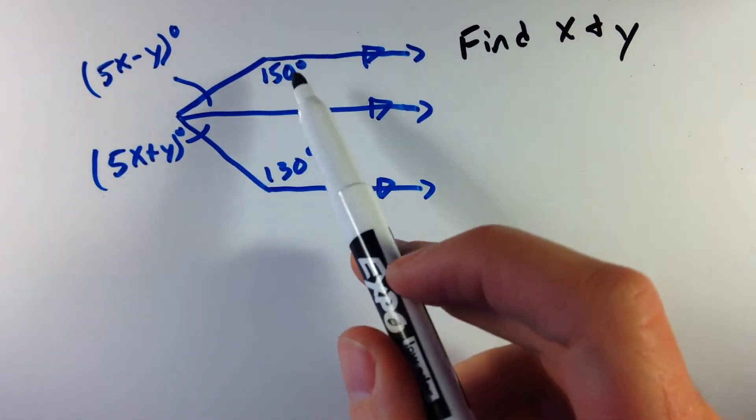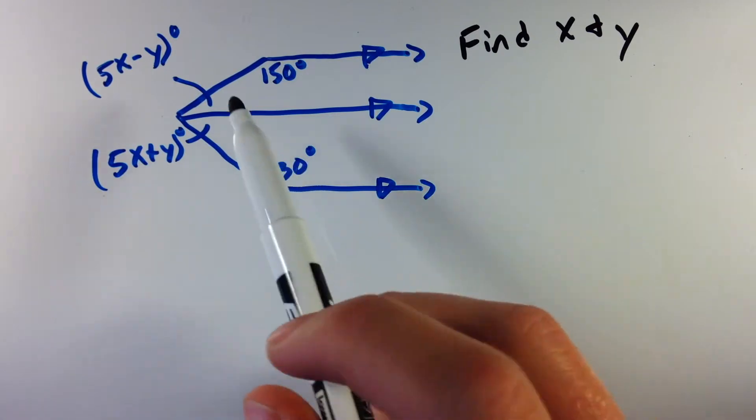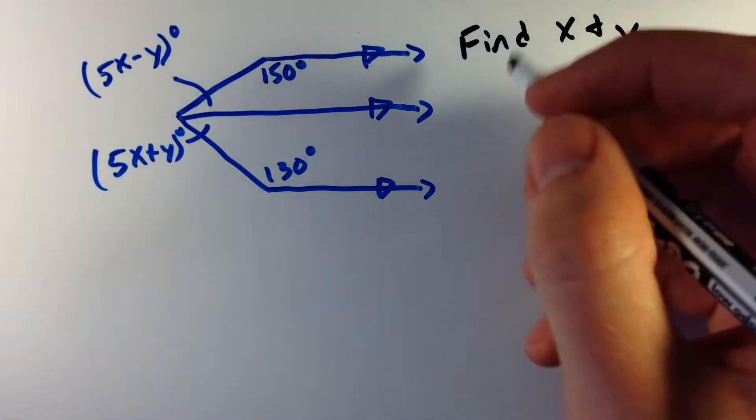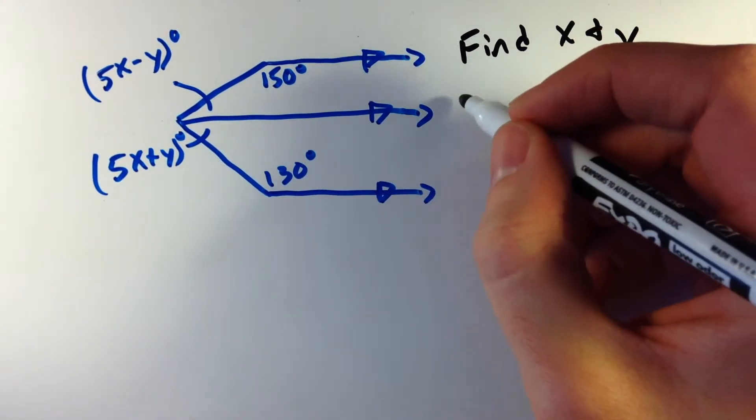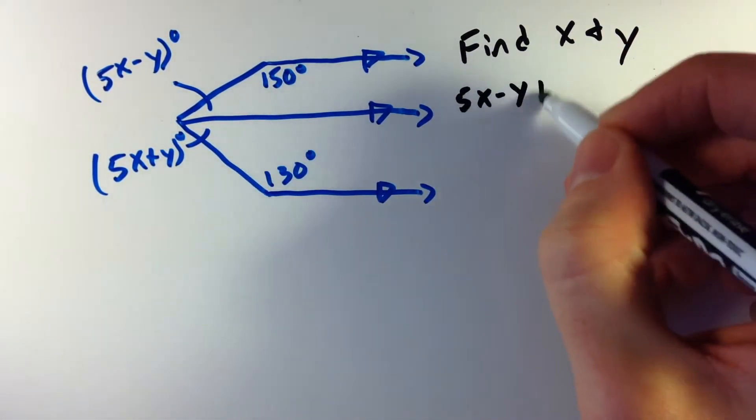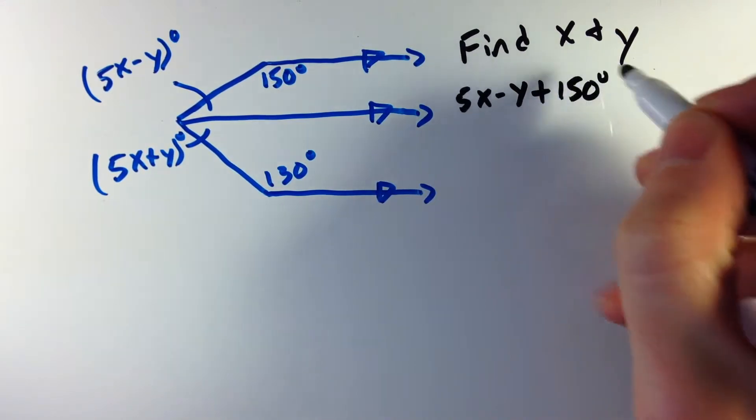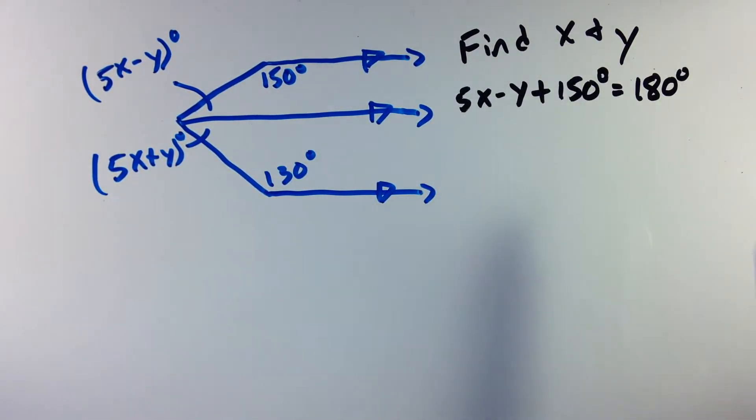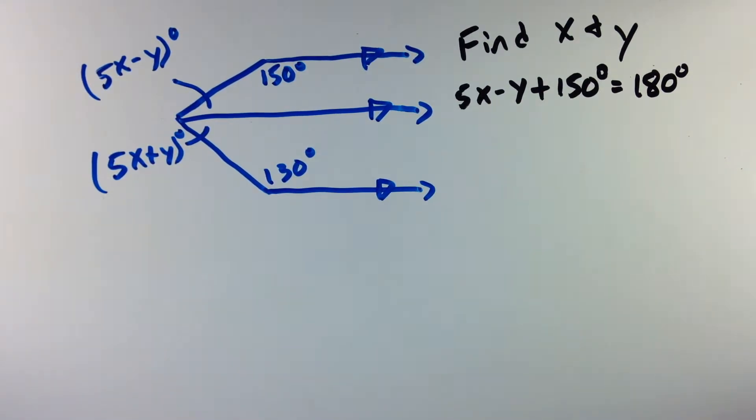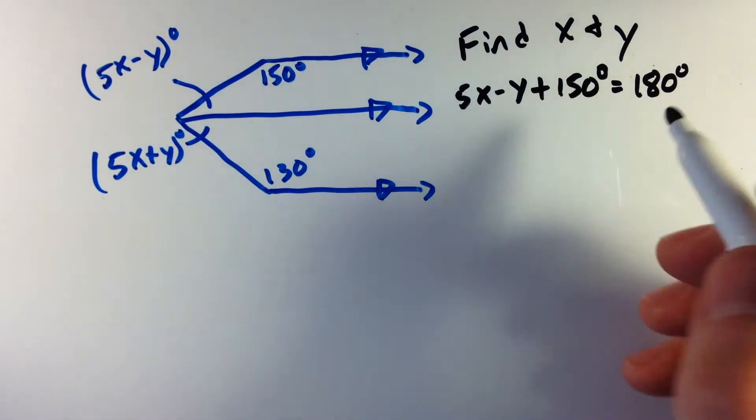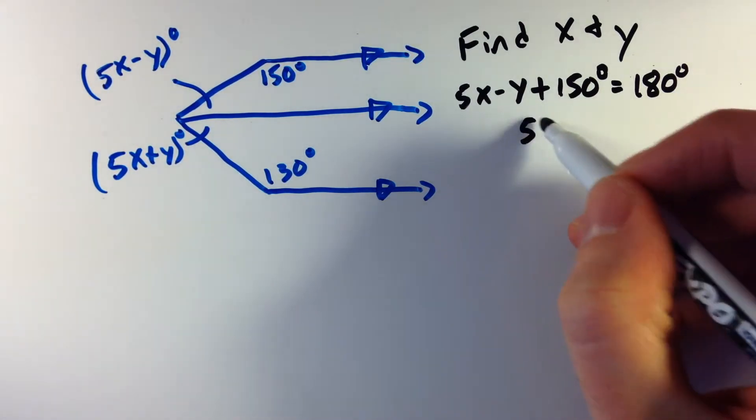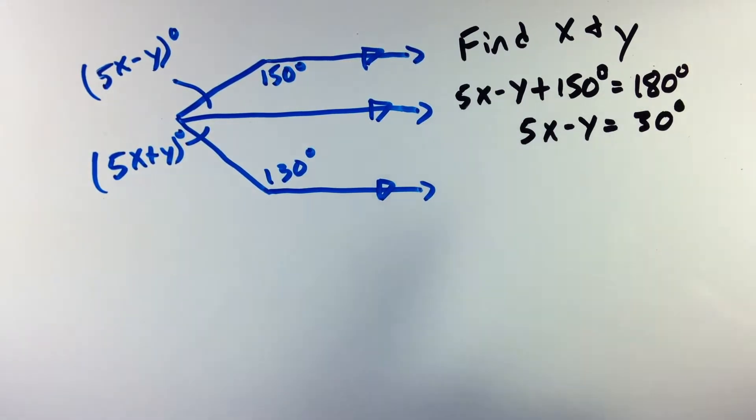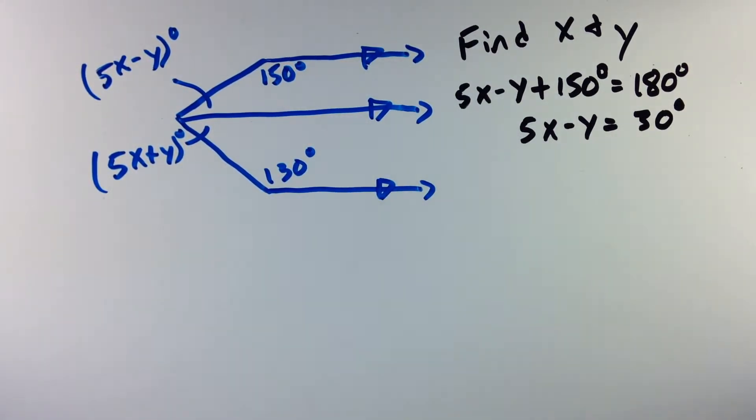So for our first equation here, our first equation we need to make, because we're going to solve a system of equations, is knowing that these two angles here are supplementary, I then can state that 5x minus y plus 150 degrees is equal to 180 degrees. Supplementary meaning they add up to be 180 degrees. And now I'm going to simplify and just subtract that 150 to both sides, and I'm left with 5x minus y equals 30 degrees. So now I have one equation that I'm going to work with.